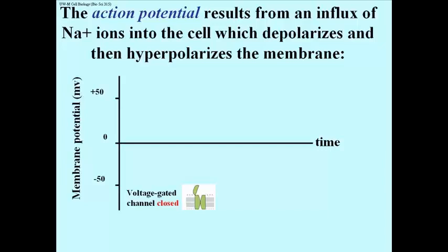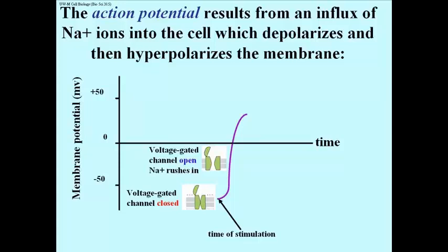So ions cannot flow through this voltage gated channel. If the time of stimulation is at the point of the arrow shown here, after stimulation the voltage gated channel opens and sodium rushes into the cell.